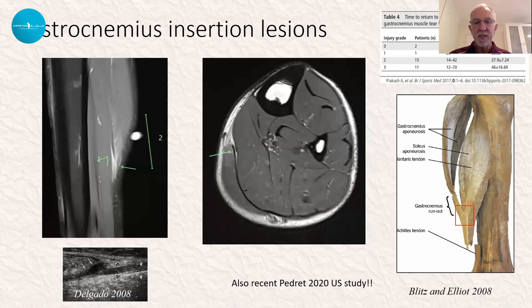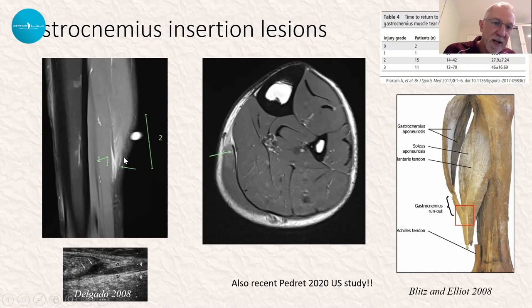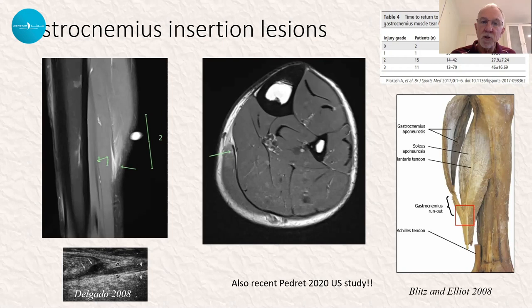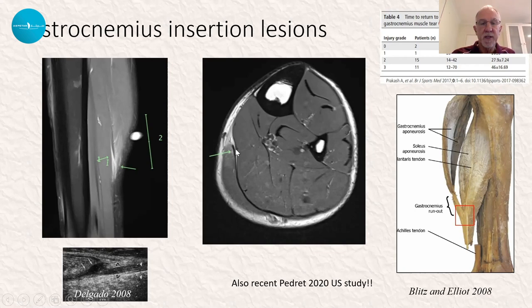Regarding soleus injuries: if we look at gastrocnemius injuries, these are a real challenge. This is the insertion of the terminal phase of gastrocnemius connective tissue onto the soleus aponeurosis. From the marvellous anatomical work done by Blitz and Elliot, we see that the area of this insertion is actually only about as big as a postage stamp, both for the lateral and medial gastrocnemius. So injuries here often involve intratenderness tearing or cleaving of the soleus aponeurosis and/or separation of the gastrocnemius aponeurosis and/or muscle involvement.